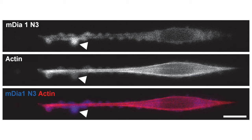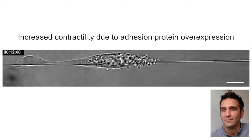The simulation also helped explain another aspect of the cell's behavior on suspended nanofibers: namely that when cell contractility was increased due to the overexpression of actin-nucleating formin proteins, for example, the cells no longer formed fin-like waves and instead produced large cylindrical protrusions called lobopodia.